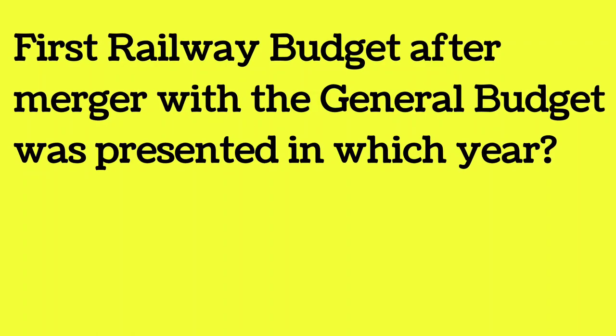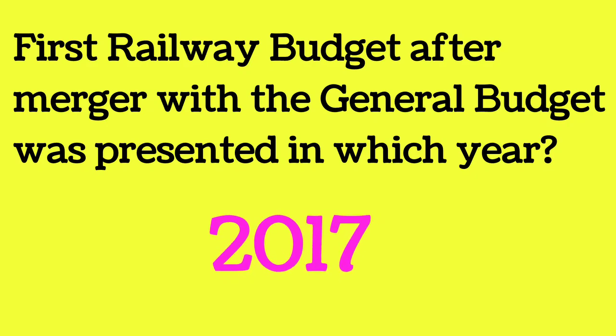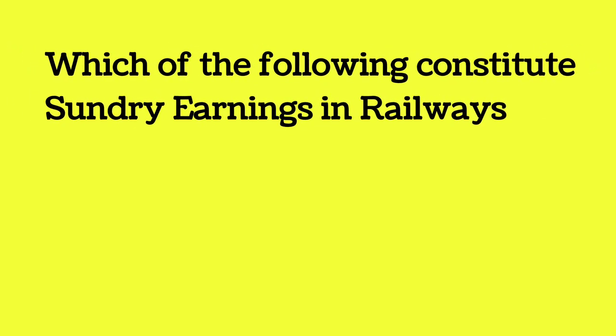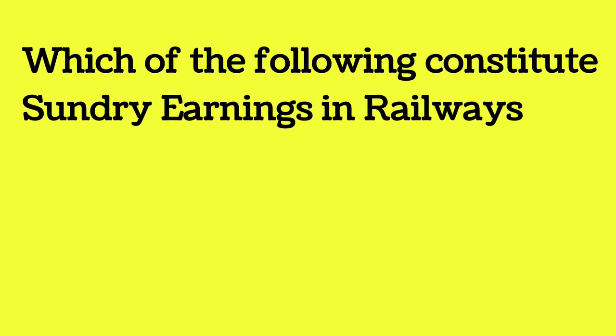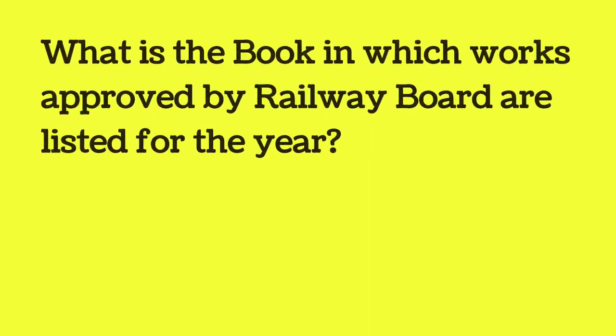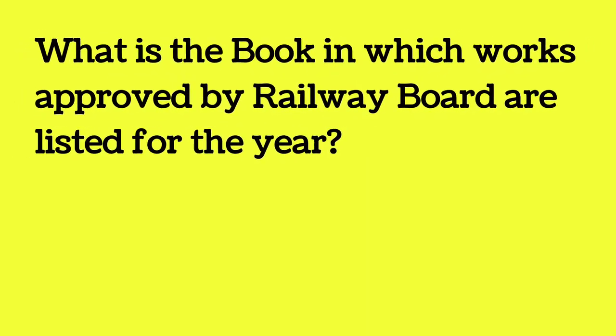The first railway budget after merger with the general budget was presented in which year? In 2016 the government decided and announced the merger, and from 2017 the first combined budget came. Sundry earnings in railways refers to earnings neither from goods nor from passengers.